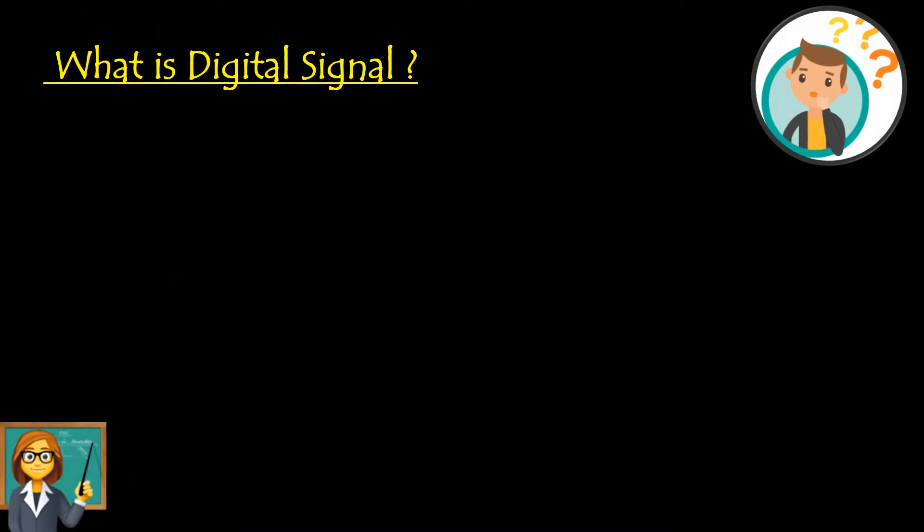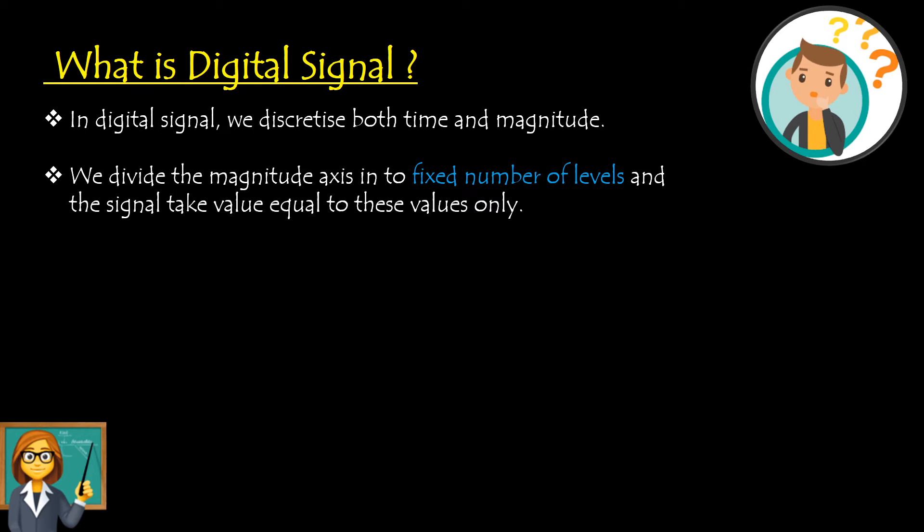In a digital signal, we discretize both the time and magnitude axes. For explanation purposes, I have taken this graph. Looking at the time axis, you can see that I have discretized it into 5 equal intervals of time duration. This general expression for defining equal interval of time duration is called delta-t, which is equal to t_n minus t_(n-1).